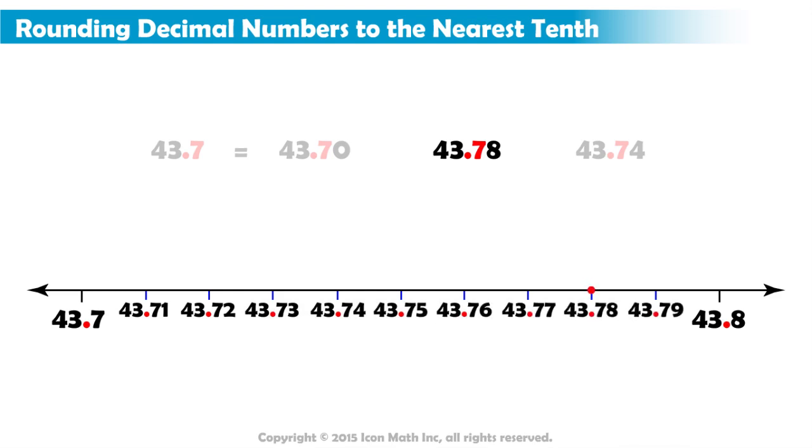Now, we mark the location of 43 and 78 hundredths. The rule is that if the number is exactly at the midpoint or crosses it, then we round up to the greater tenths value.